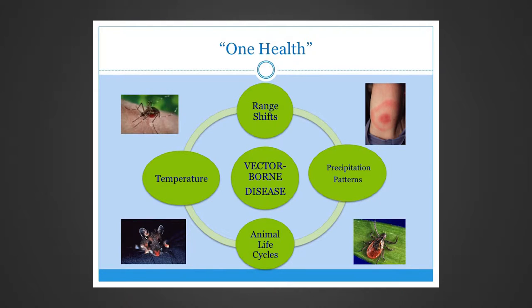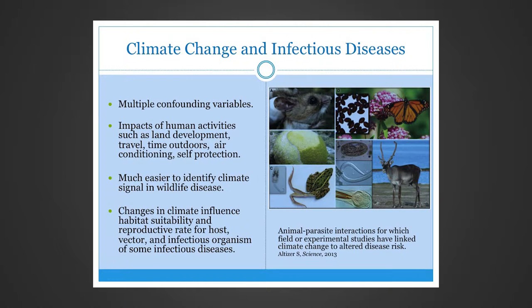Changing environmental conditions, such as temperature and precipitation pattern changes, are affecting the range and life cycles of vectors and hosts of some infectious diseases, and these changes ultimately affect the health of people. Determining the role of climate in vector-borne illness is very complex because of multiple confounding variables. Disease incidence is impacted by human activities such as land development, travel, time spent outdoors, air conditioning, and self-protection.